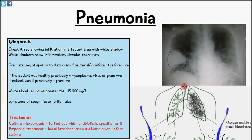If the patient was previously healthy, a common rule is that the cause was from mycoplasma, a virus, or a gram positive bacteria. If the patient was previously ill in hospital or they have some systemic conditions like diabetes, then gram negative is suspected.